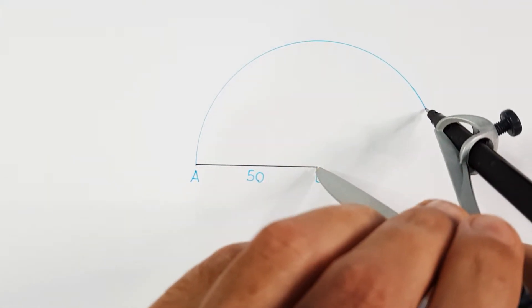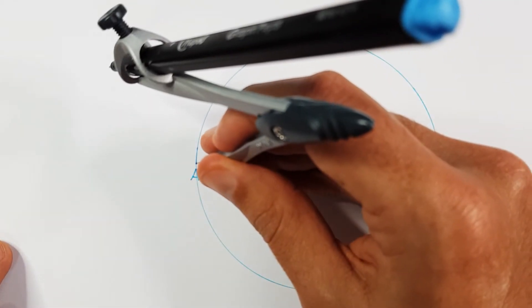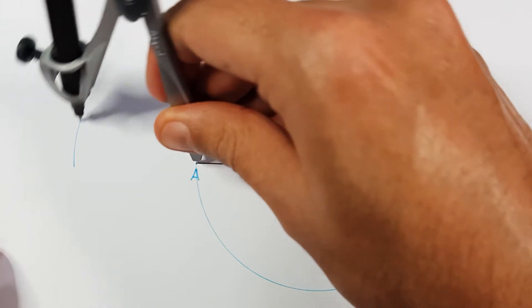Start off by adjusting your compass to the full side length and construct two circles on both point A and point B. Label these two circles as 1 and 2.